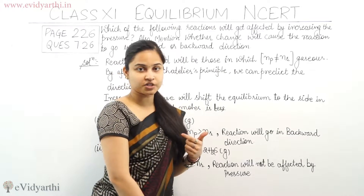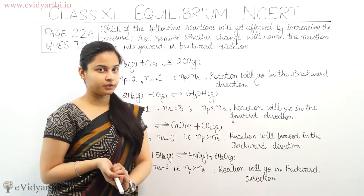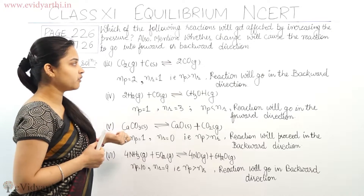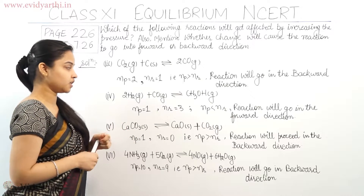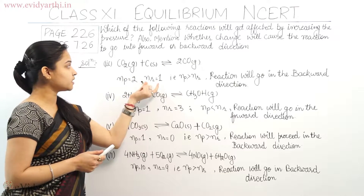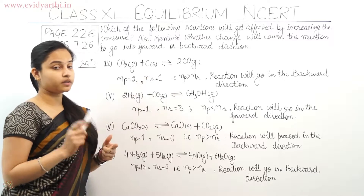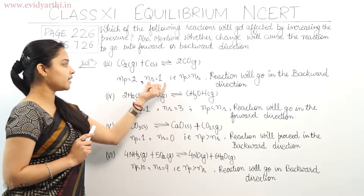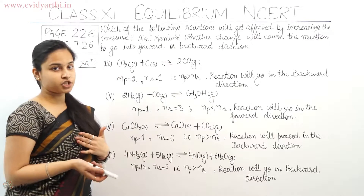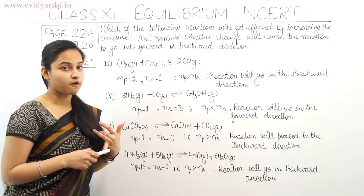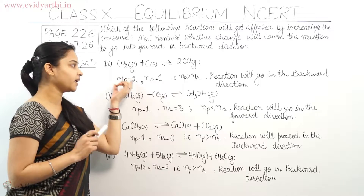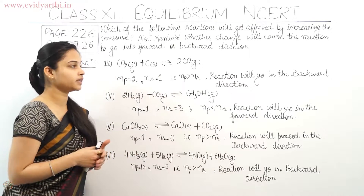Moving on to the third reaction: CO₂(g) + C(s) in equilibrium with 2CO(g). The number of moles in the product is 2, so Np = 2. Nr = 1, because we do not count carbon which is in the solid state — we only count species in the gaseous state. Since Np is greater than Nr, and pressure is increased, the reaction will move in the direction with fewer moles of gas — the reactant side — so the reaction goes in the backward direction.